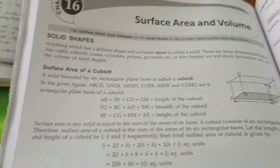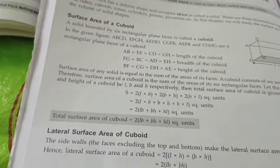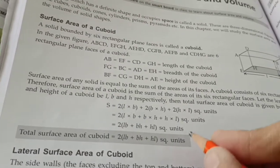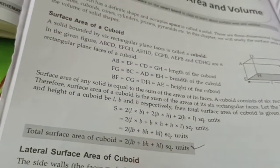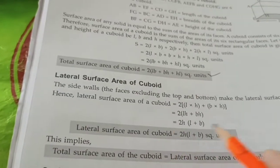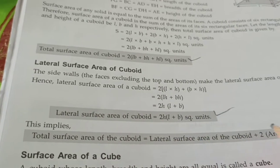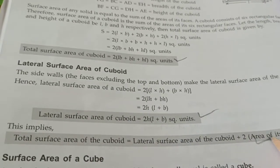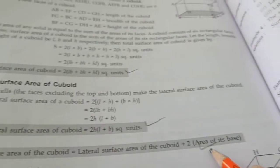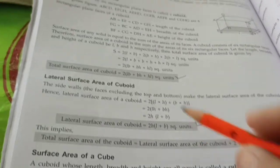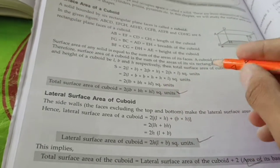Now we are starting with chapter 16. You will have to write these formulas which I am taking over here. Total surface area of cuboid is equal to lateral surface area of cuboid plus two times area of its base. Now what is surface area?